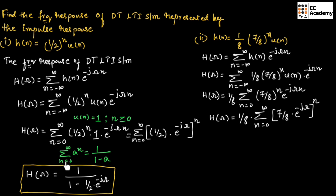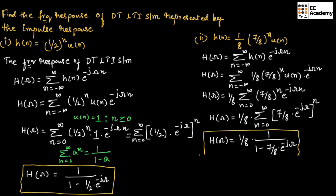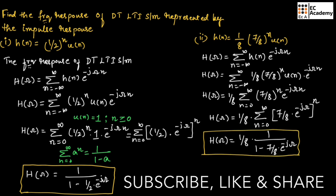Again, using the formula: summation from n equals 0 to infinity of a^n equals 1 divided by (1 minus a), we get H(ω) equals (1/8) times 1 divided by (1 minus (7/8)e^(-jω)). This is the frequency response of the LTI system for the second problem. This concludes the topic of frequency response of discrete time LTI systems. Hope you have understood. Thank you.